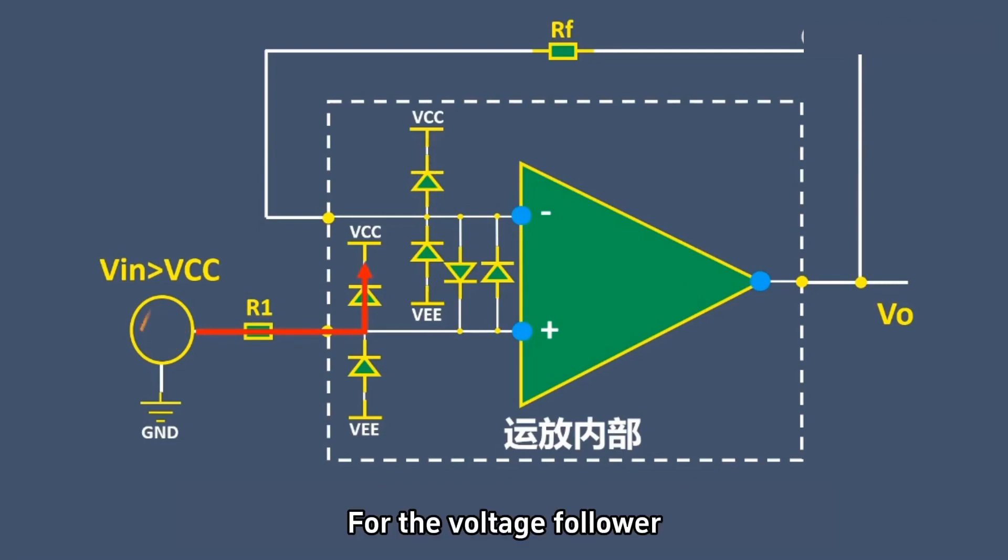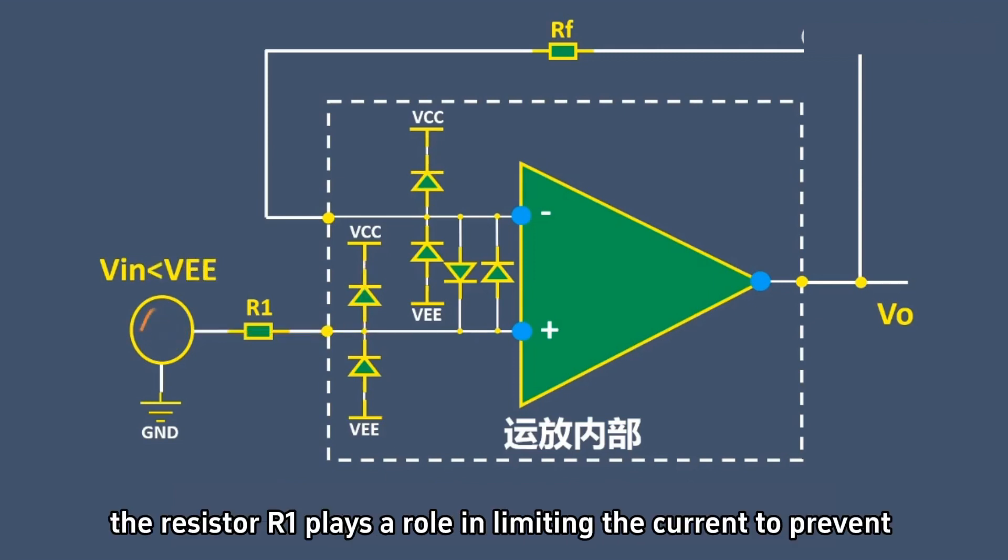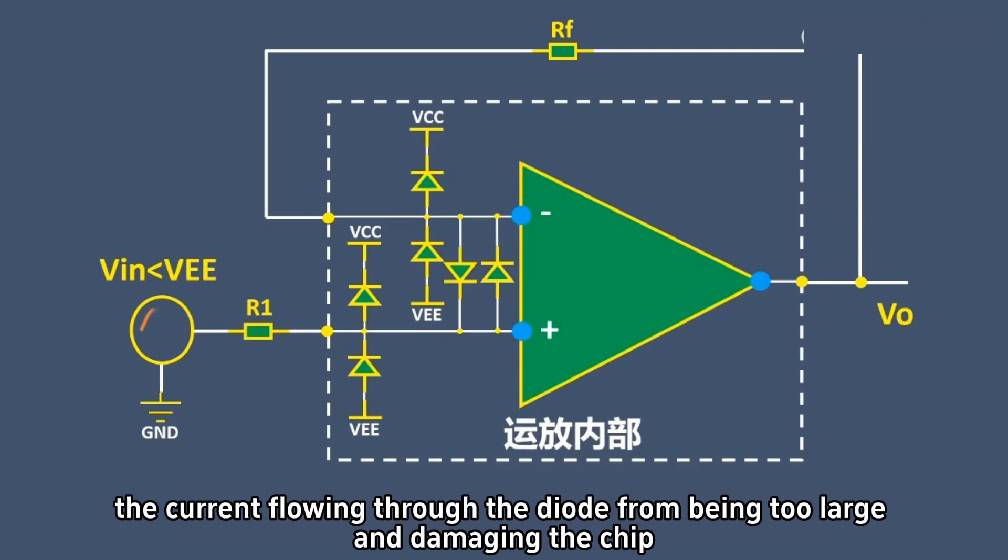For the voltage follower, when the input signal exceeds VCC, the upper diode conducts, so at this time, the resistor R1 plays a role in limiting the current to prevent the current flowing through the diode from being too large and damaging the chip.